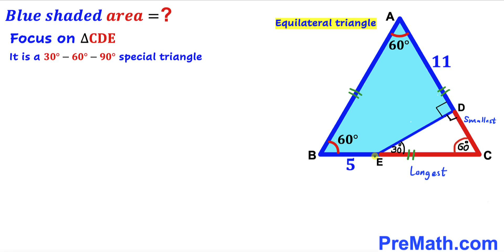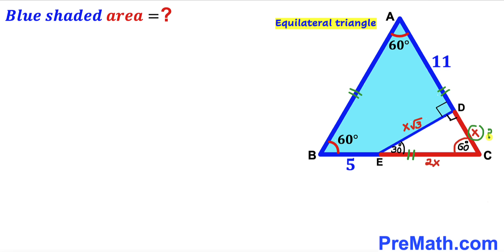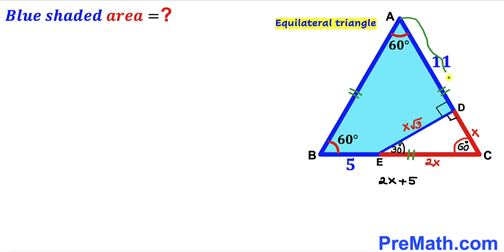In a special 30-60-90 triangle, if the smallest leg is x, then the longest leg (hypotenuse) is 2x and the third leg is x times the square root of 3. Now, looking at the diagram, we can see that side BC is going to be 2x plus 5, so we write BC = 2x + 5.